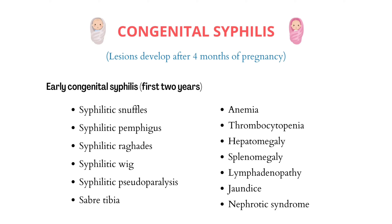Now let's look at congenital syphilis. Congenital syphilis is present in the baby right from birth, transmitted from the mother. The lesions develop after 4 months of pregnancy. If the mother is treated before 4 months of pregnancy, this can prevent fetal damage. Late onset of pathology in the fetus leads to stillbirth rather than abortion.